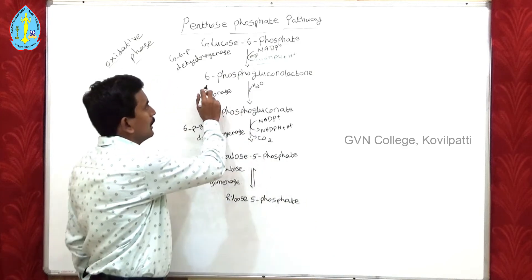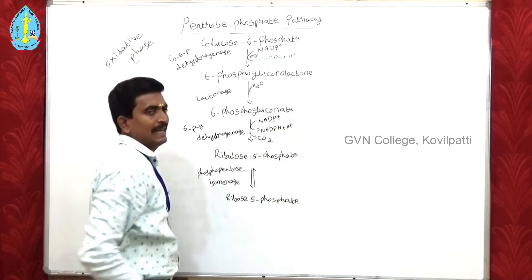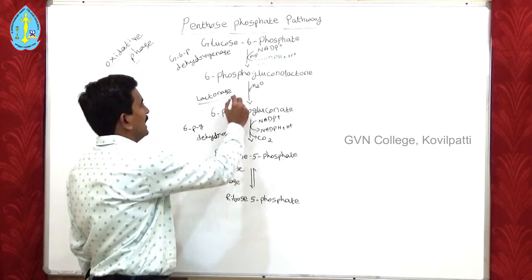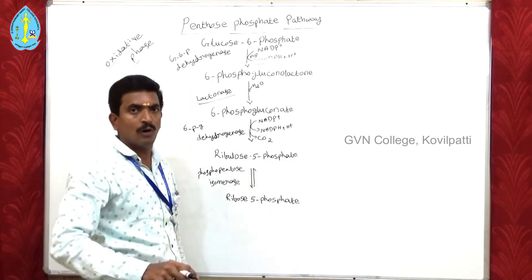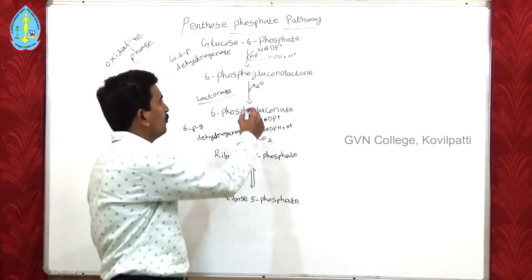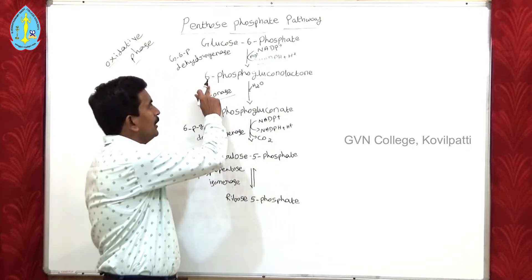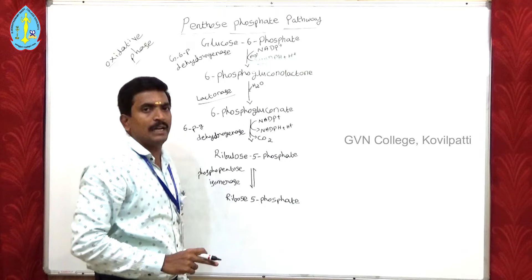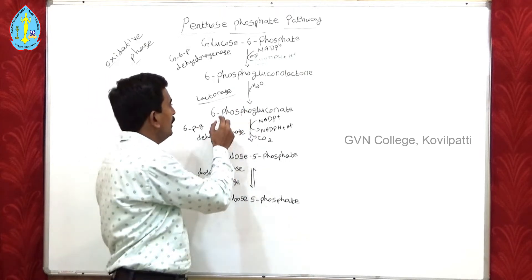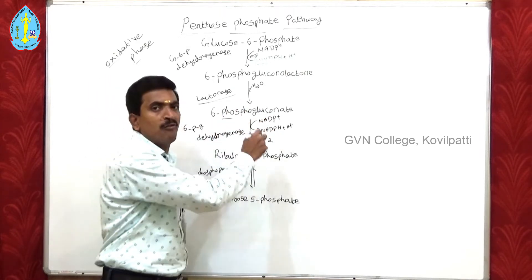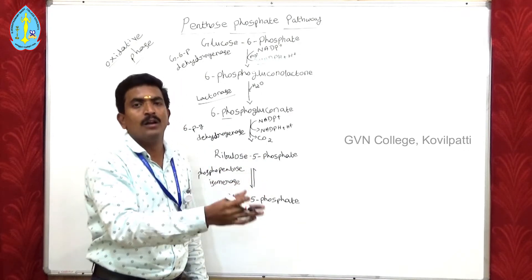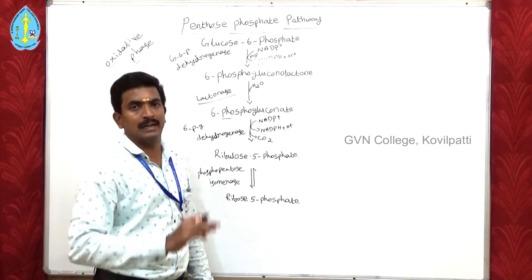Then, 6-phosphogluconolactone is formed. The enzyme lactonase is involved — lactonase adds one water molecule. After that, the 6-phosphogluconolactone is converted into 6-phosphogluconate. The phosphogluconate is formed, and this is why the cycle is otherwise called the phosphogluconate cycle.